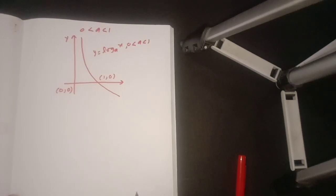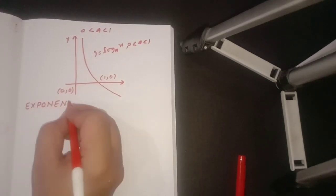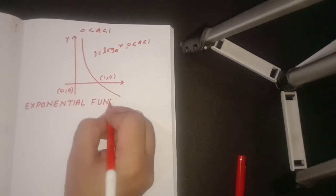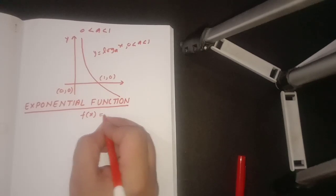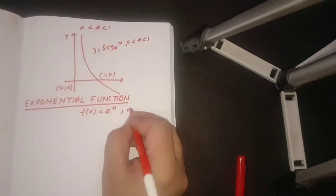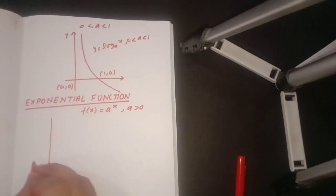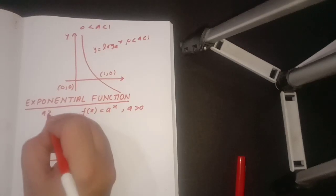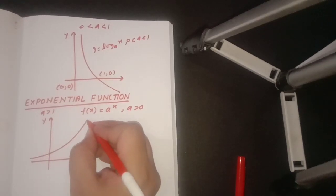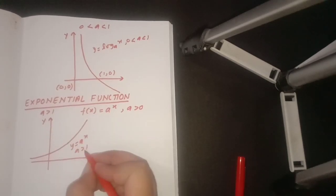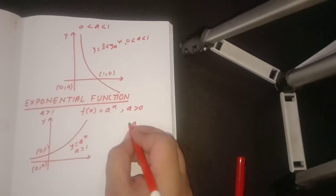One more function is the exponential function. It can be written as f(x) = a^x, where a is positive. Its graph is also in two forms. In the first form, when a > 1, the graph rises steeply. The point (0, 1) is marked and it is the origin reference.